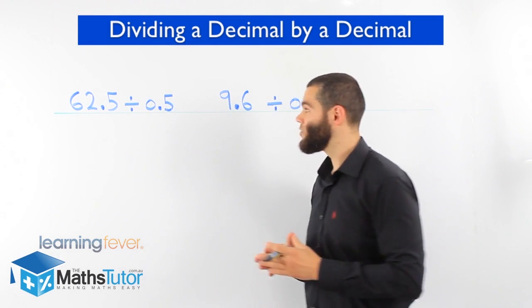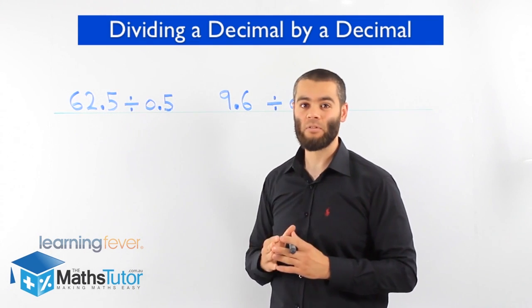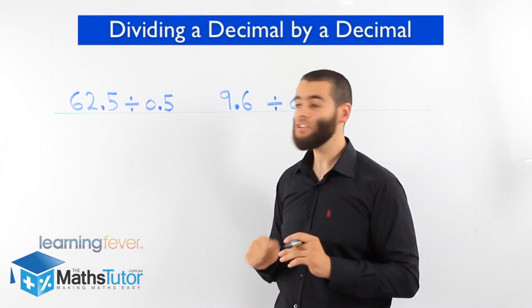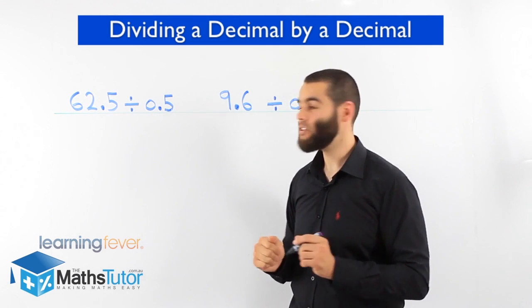62.5 divided by 0.5. A decimal divided by a decimal. It can't be done. So we change this decimal to a whole number. Then we can do it.